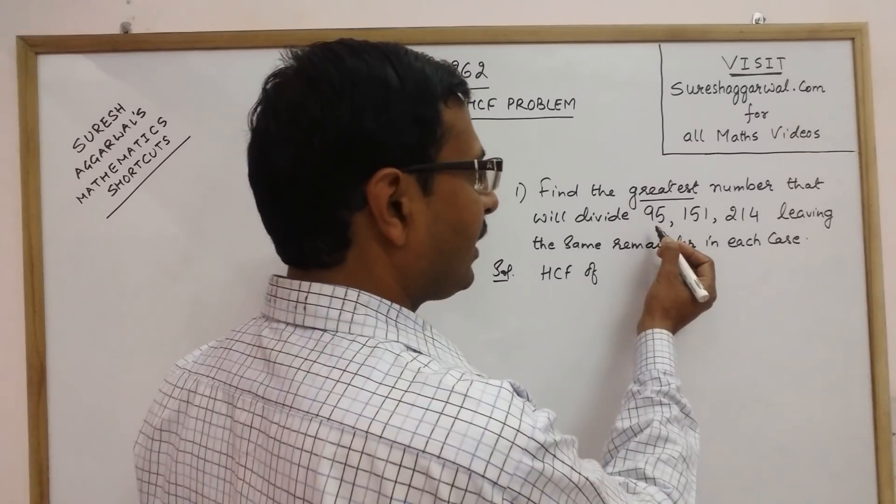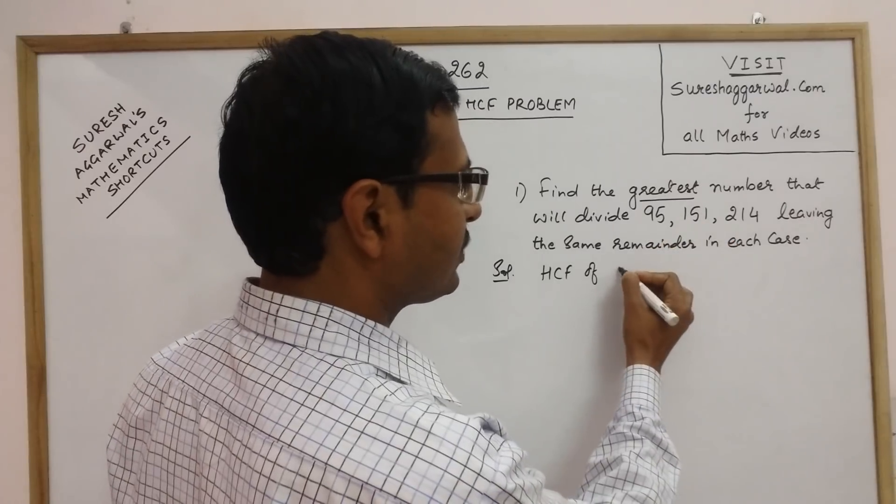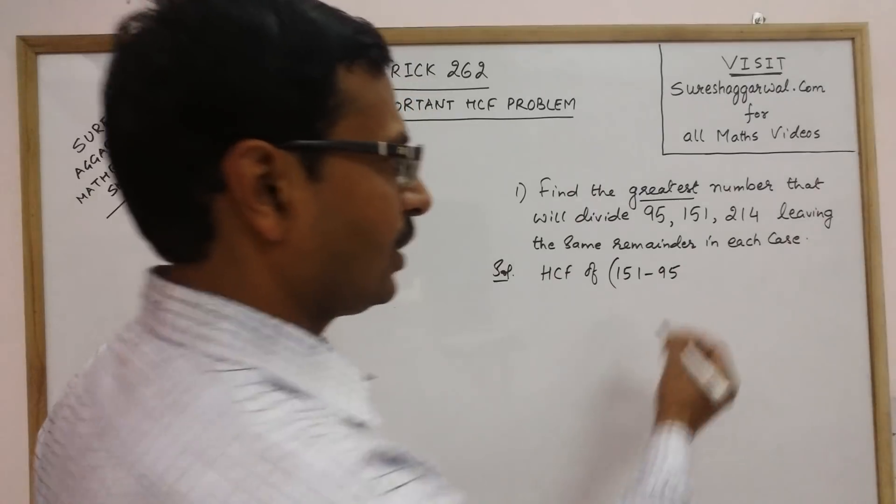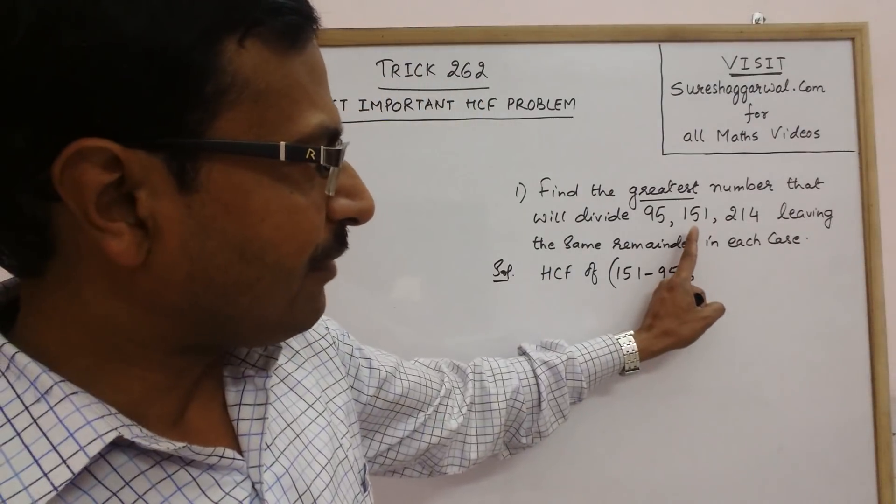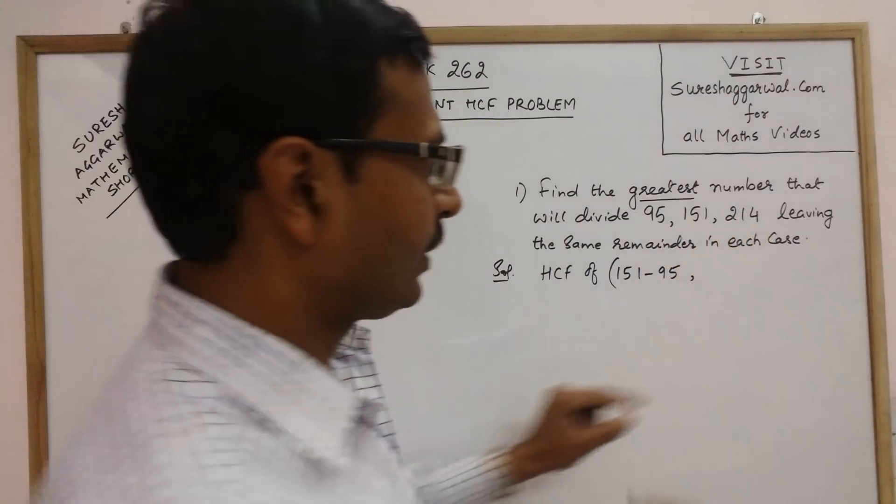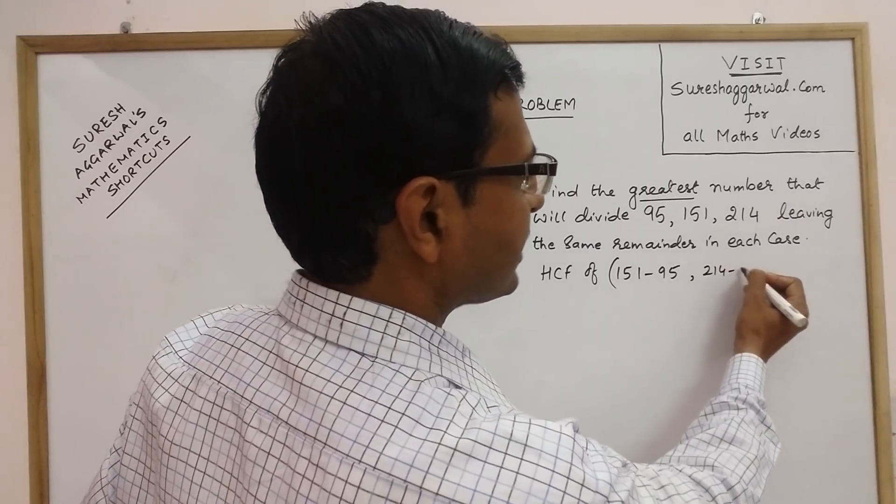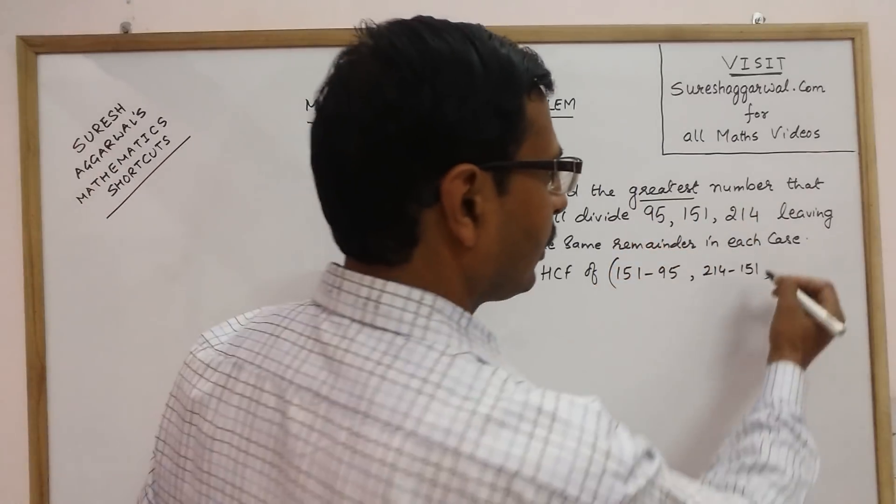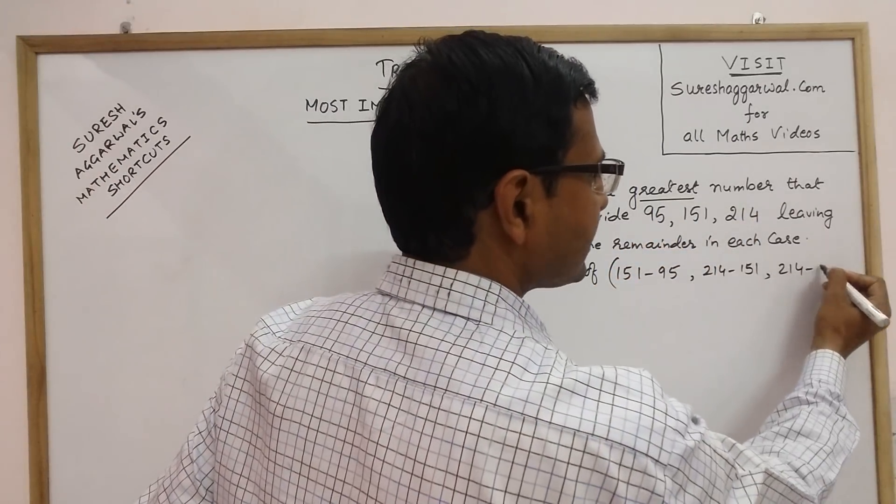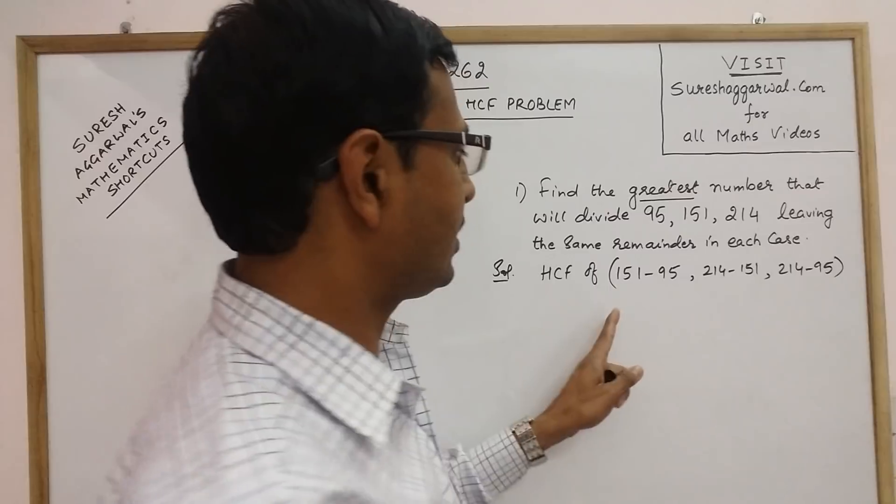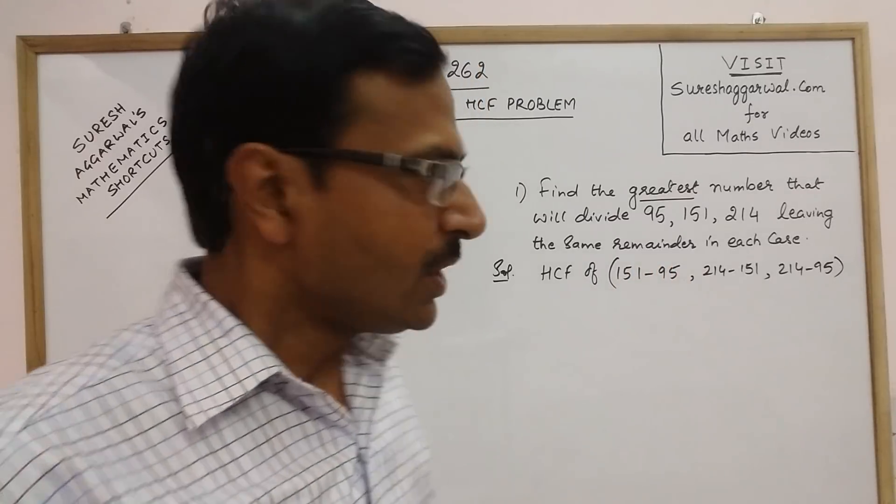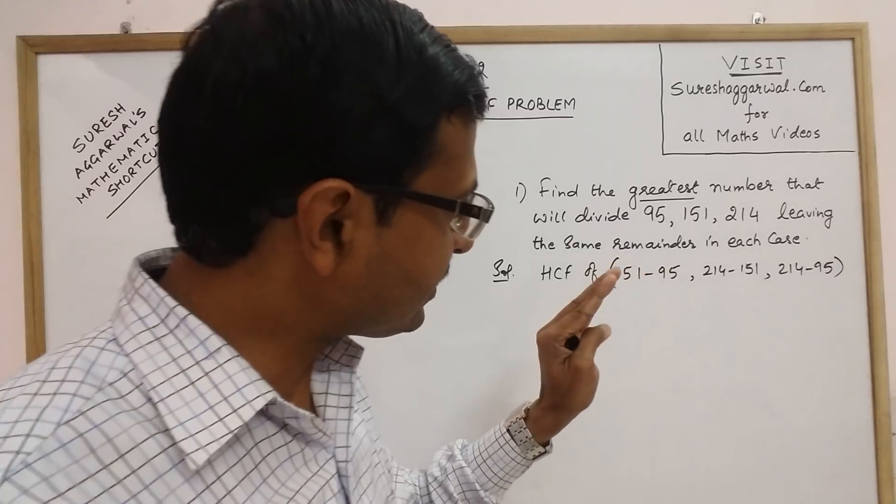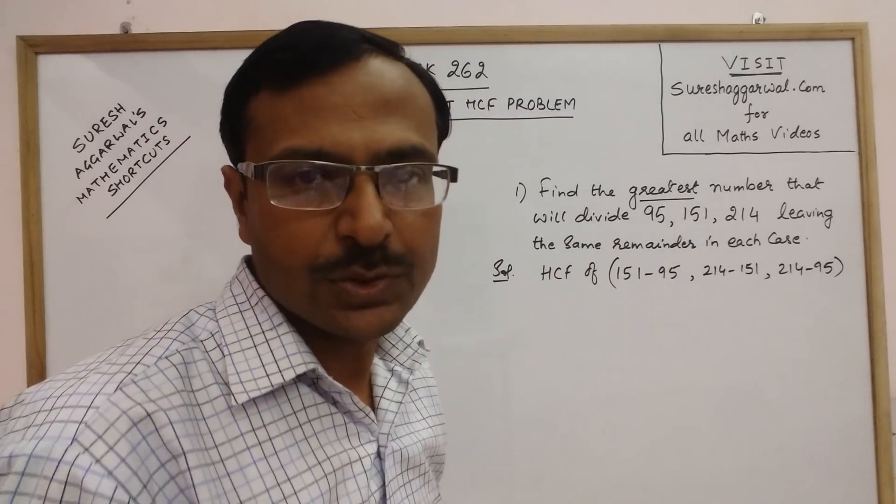These are the three numbers, so I will take the difference of pairs of numbers. If I make pair of 95 and 151, so 151 minus 95 will be the first difference. If I make pair of 151 and 214, the difference 214 minus 151. And the third pair, 95 and 214, 214 minus 95. These three differences, if you find the HCF, you are through with the question.